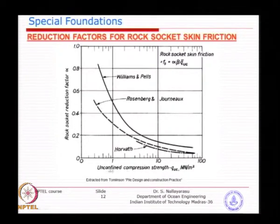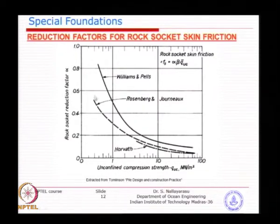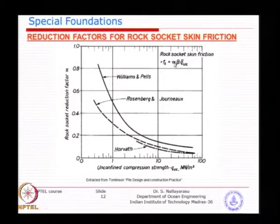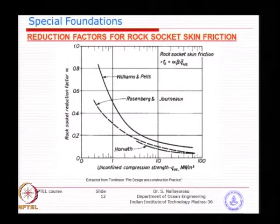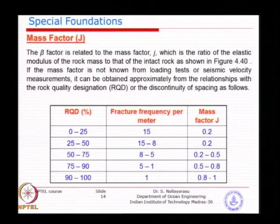Various research studies, depending on rock type and unconfined compressive strength values ranging from as low as 1 to 100, show alpha values up to 0.8 or 0.85. You calculate Fs as a multiplication factor similar to the alpha method. However, it does not depend on overburden pressure — it depends on the strength of the rock itself.